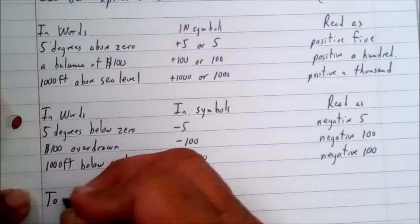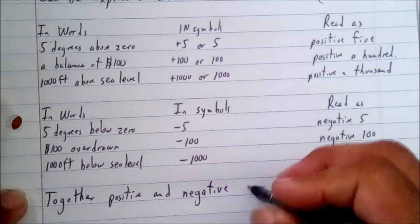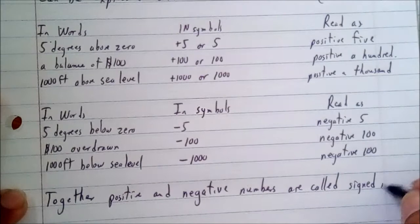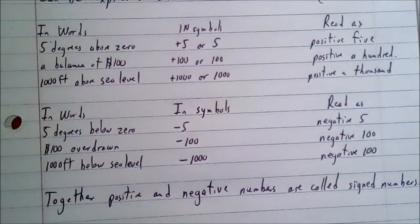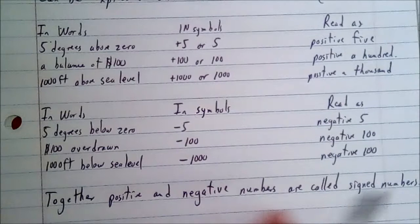A positive value can be read with positive in front of the numerical value and read in words. Likewise, if it is negative, it can be read as negative five and written in symbol. Positive numbers and negative numbers together are called signed numbers — and we understand why they're called signed numbers because they have a sign, simple as that.